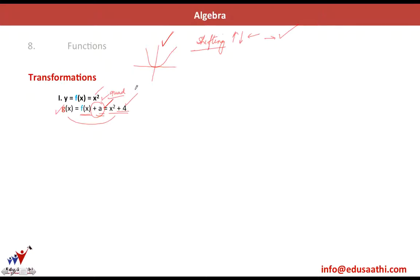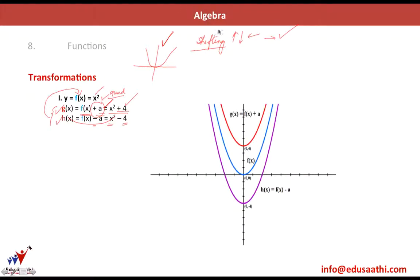Similarly, h(x) = f(x) - a means a decrement, so h(x) would be x² - 4. For h(x) and g(x), the graphs can be drawn based on the graph of f(x). The blue line is f(x) = x². For g(x), which is an increment in the positive direction, the graph moves upwards — the point of minima moves from (0, 0) to (0, 4). So x² + a shifts up by a places.